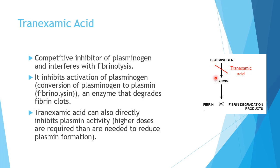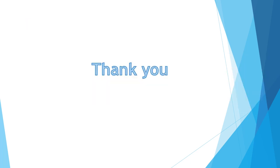TXA binds to plasminogen and inhibits its conversion to plasmin. At higher doses, tranexamic acid can become a direct inhibitor of plasmin itself. At the doses most commonly used clinically, it acts by inhibiting the conversion of plasminogen into plasmin, thereby preventing fibrinolysis and preserving the stable blood clot. Thank you for listening to this lecture — more lectures on other orthopedic topics will follow.